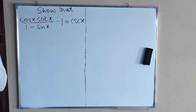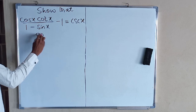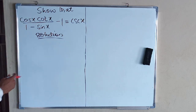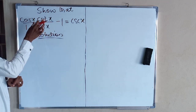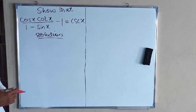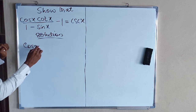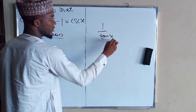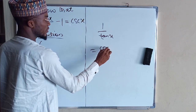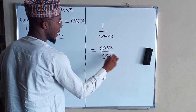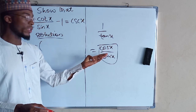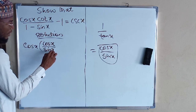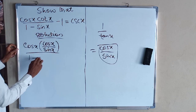So we begin. We have cos(x) times cot(x), and this is what we need to transform. We transform cot(x) into its cos and sine ratio form. We know that cot(x) is the inverse of tan(x), and the inverse of tan(x) is the same as cos(x) divided by sin(x). So instead of cot(x) we write cos(x) divided by sin(x).